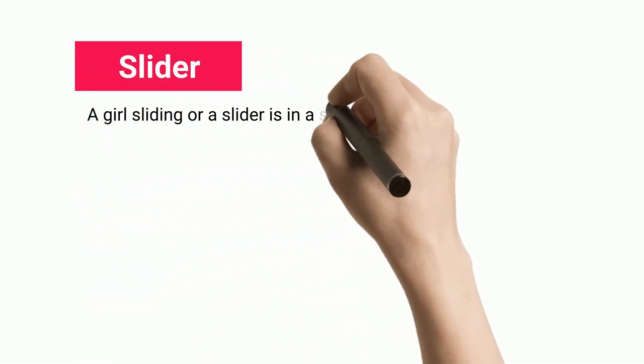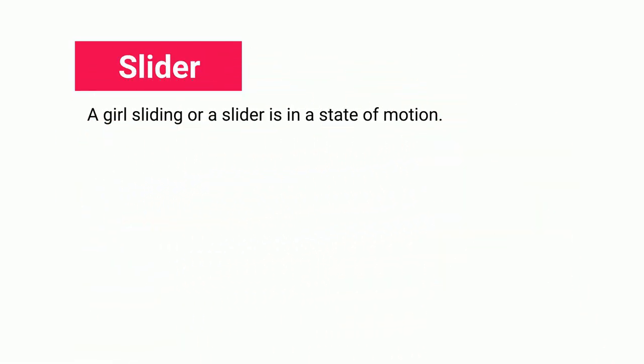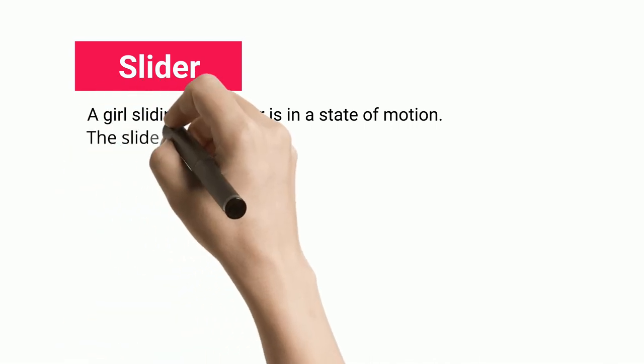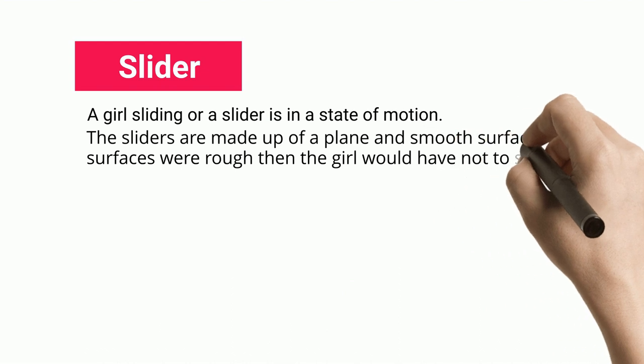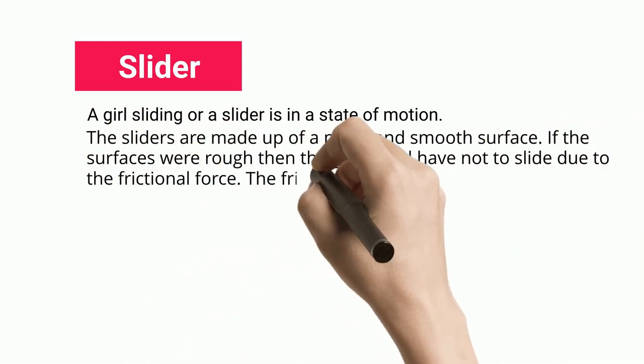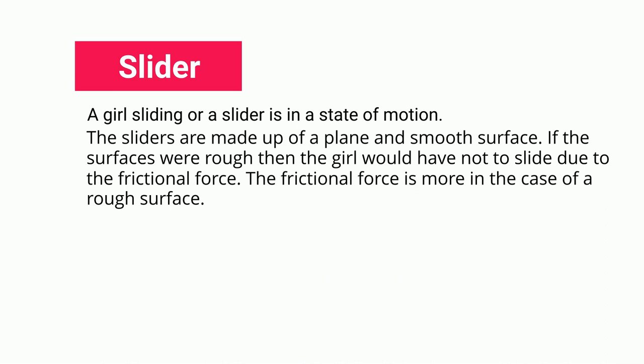Slider. A girl sliding on a slider is in a state of motion. The sliders are made up of a plain and smooth surface. If the surfaces were rough, then the girl would not be able to slide due to the frictional force. The frictional force is more in the case of a rough surface.